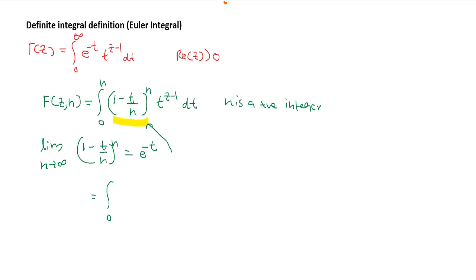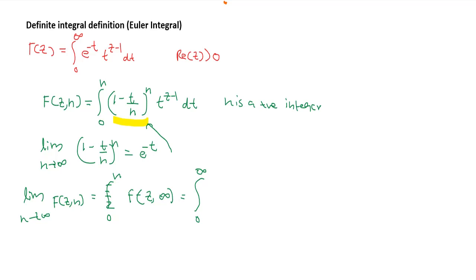Substituting this limit result into the function, as n goes to infinity, (1 minus t/n) raised to n becomes e raised to minus t. So as limit n goes to infinity, f(z, n) becomes f(z, ∞), which equals the integral from 0 to infinity of e raised to minus t, times t raised to z minus 1, dt — matching the definite integral definition.